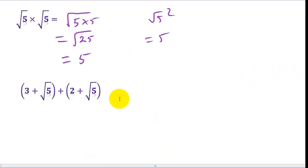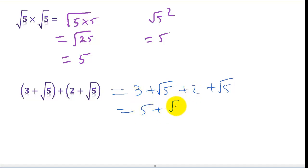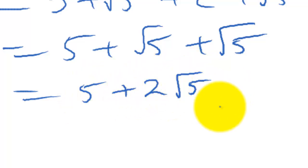In this next question, we're going to work out how to add these things together. Let's remove the brackets: 3 plus root 5, plus 2 plus root 5. We can write these in any order since we've got all plus signs. That gives us 3 plus 2, which is 5, plus root 5 plus root 5, which is 2 lots of root 5. So this simplifies to 5 plus 2 root 5. We can't simplify this any further.